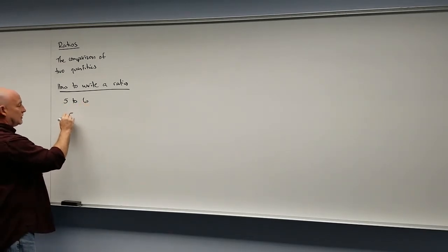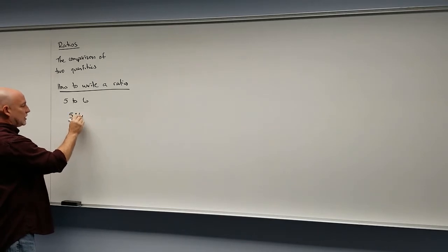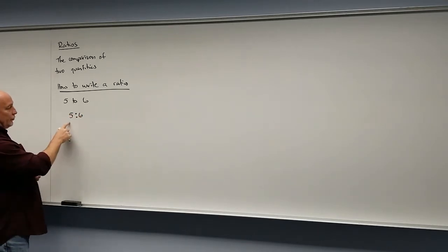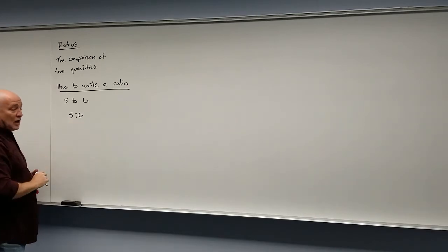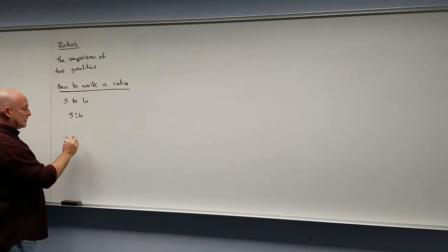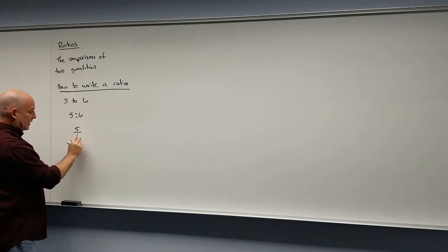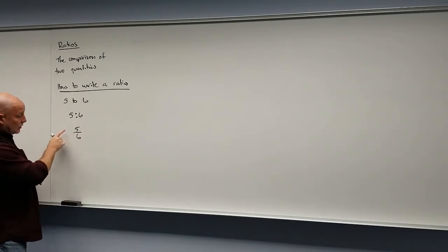Another way that you can write this is we replace the word 'to' with a colon. This also reads exactly the same way, five to six. But the way that we normally write this in terms of a fraction is five-sixths, or you can also read this as five to six.